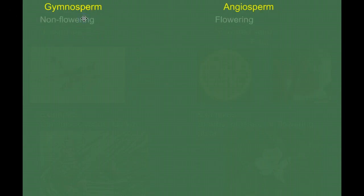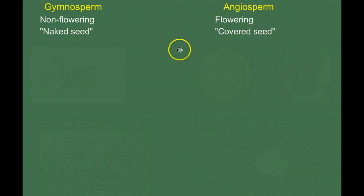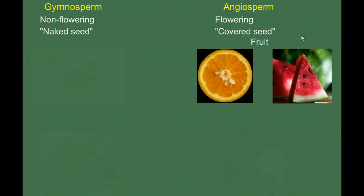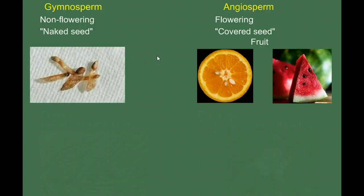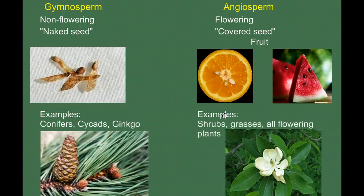Gymnosperms are the non-flowering plants and angiosperms are the flowering plants. The word gymnosperm — gymno or gymnos — means naked, and sperm means seed, so the literal translation is naked seed. Angiosperm means covered seed. What is the seed covered with? Fruit. Seeds are covered by fruit. Angiosperms — flowering plants — make fruits, whereas in gymnosperms the seeds are uncovered or naked. Examples of gymnosperms are the conifers, the cycads, and the ginkgos. Angiosperms are pretty much all the other seed plants: shrubs, grasses, trees, and all other flowering plants.